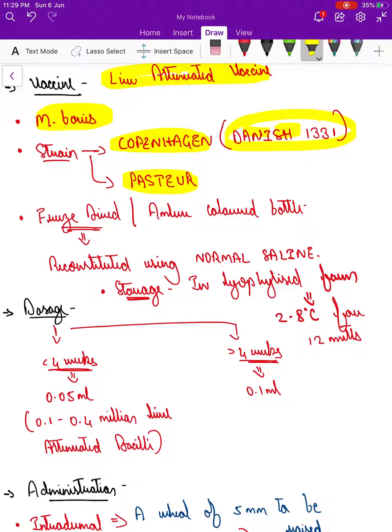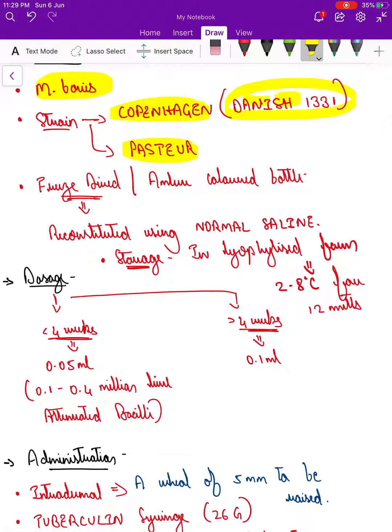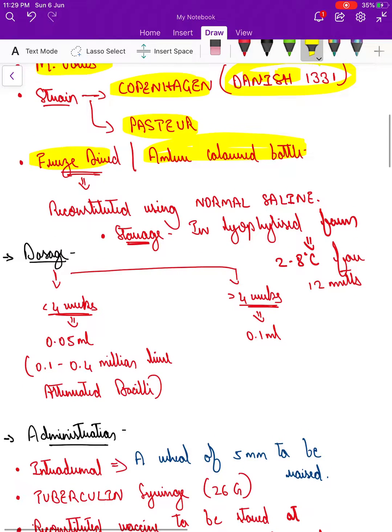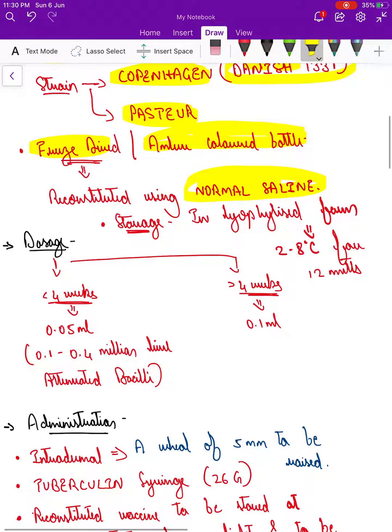Currently, Danish 1331 is being used in India, and it is freeze-dried. Why? Because it is heat sensitive. Why is it stored in an amber colored bottle? Because it is sensitive to UV rays or light. Once it has to be used, it has to be reconstituted in normal saline. It's stored in lyophilized form at 2 to 8 degrees Celsius for up to 12 months without losing any potency.